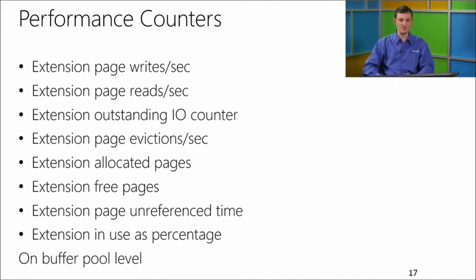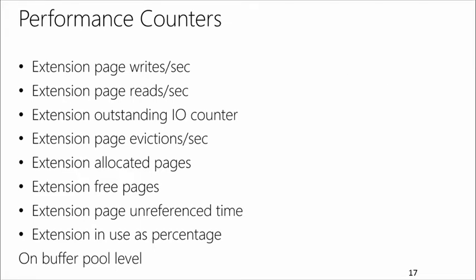Another option, especially if you want to see how buffer pool extension operates in the context of the whole application running, is performance counters. You can monitor a few performance counters from your application and from SQL Server that are related to buffer pool extension. Available counters include page reads and writes per second, evictions, page allocations and deallocations, expected page lifetime, and the outstanding IO counter — which is perhaps the most important, as it shows whether your caching device can handle the flow of pages being put on it.